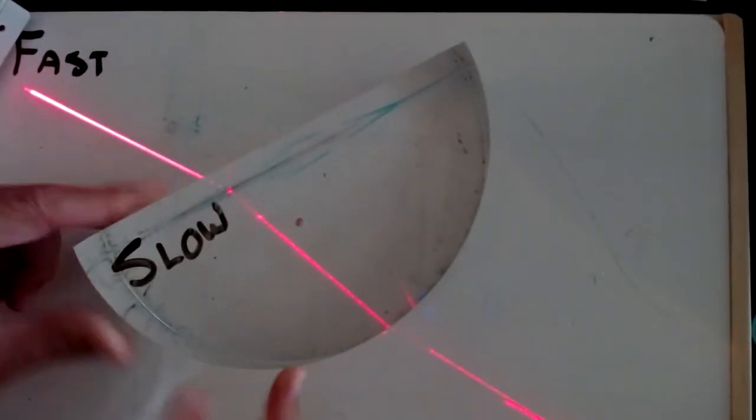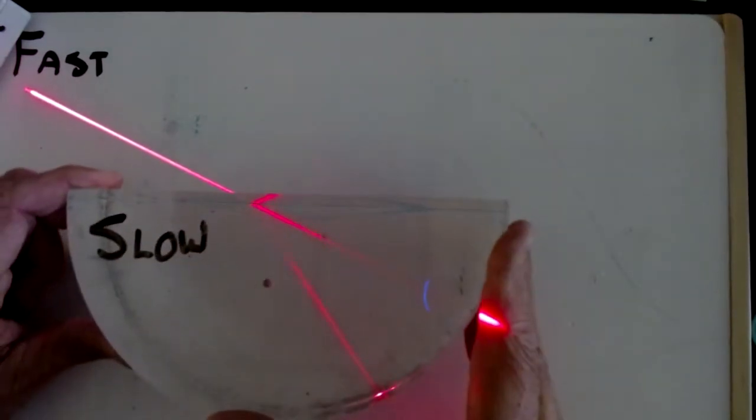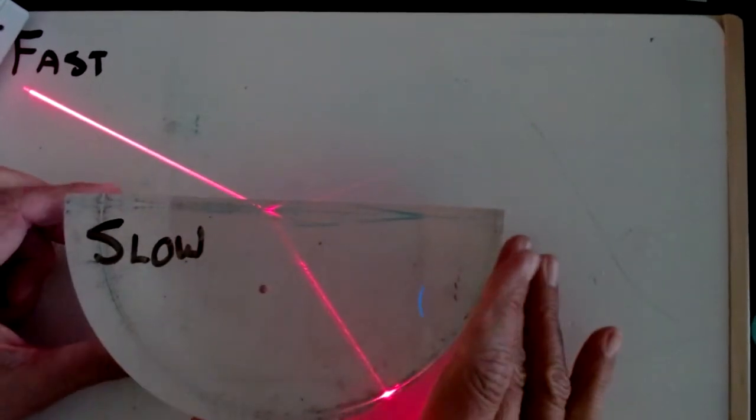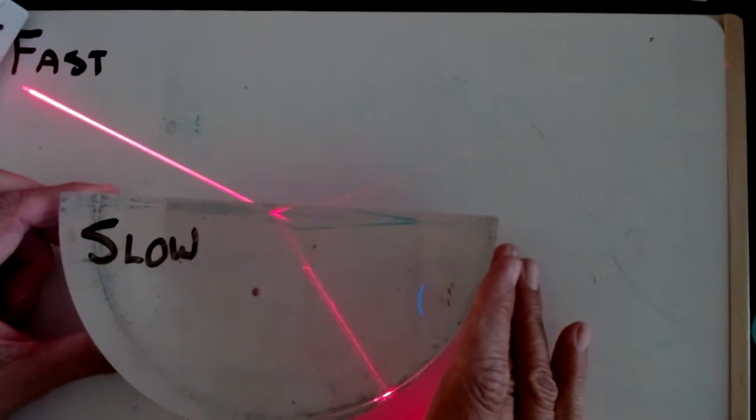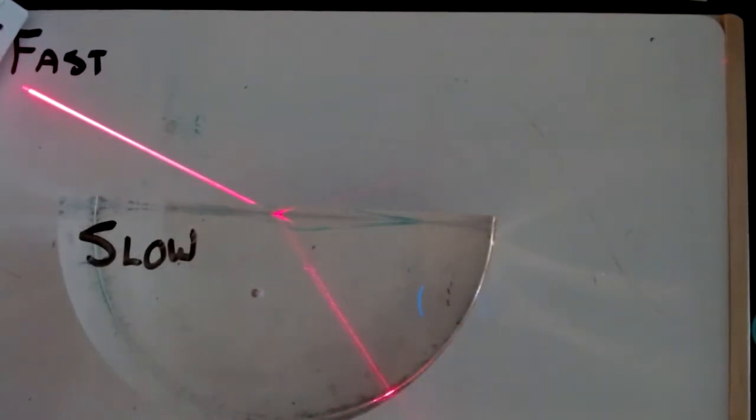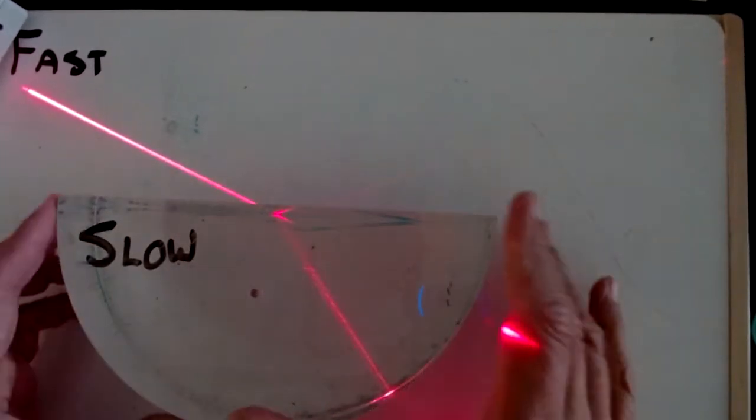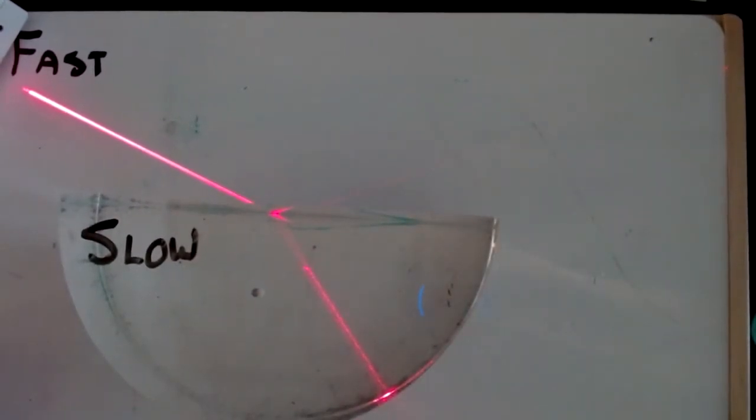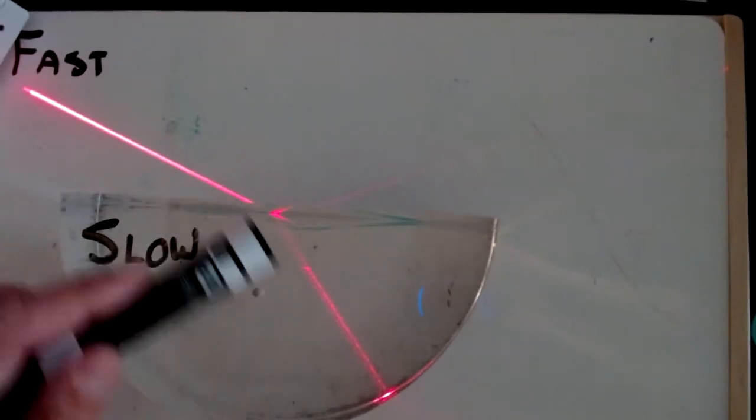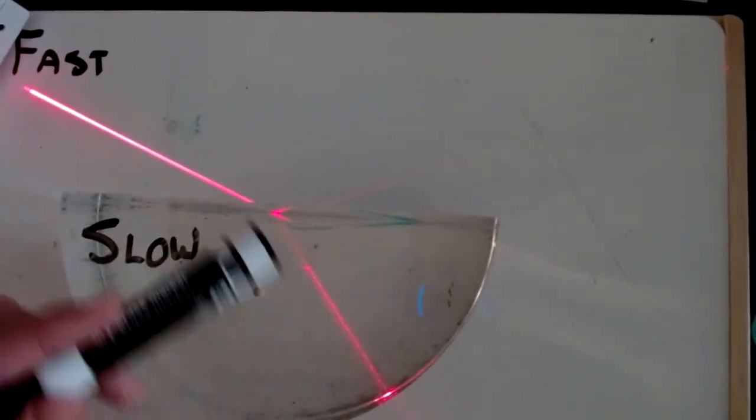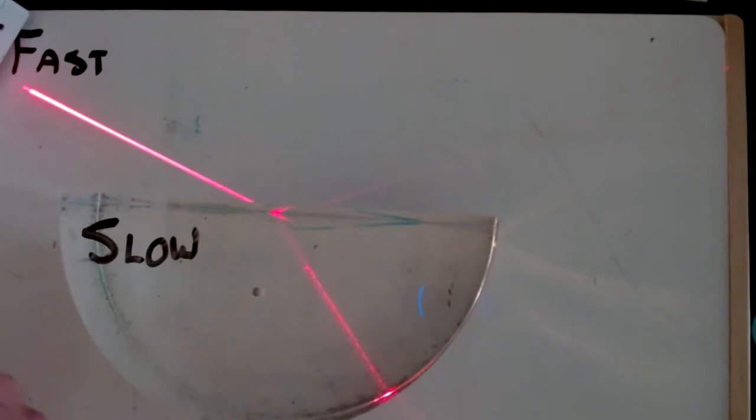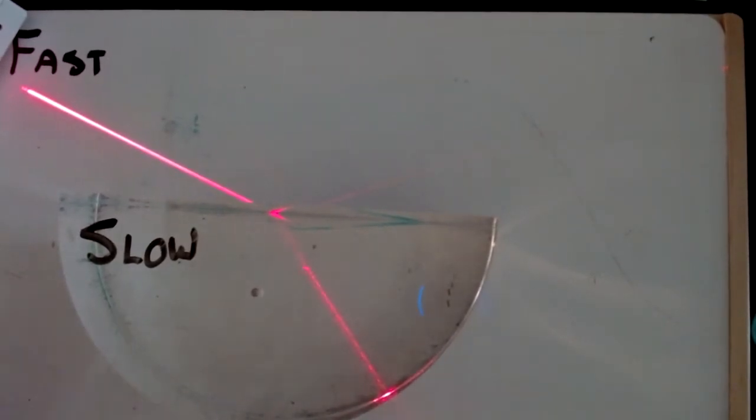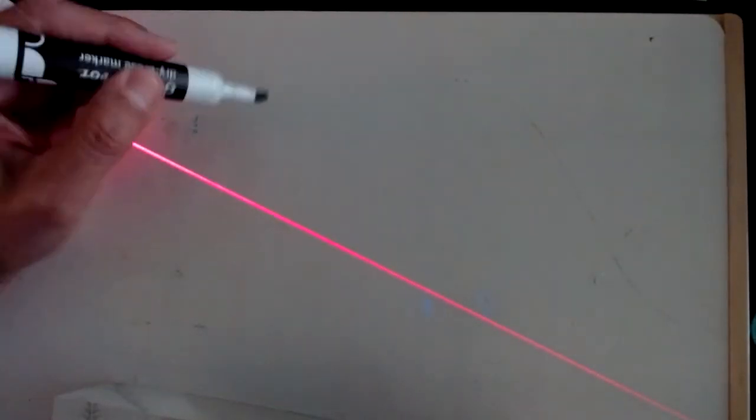It bends, it doesn't go in a straight line. And if we then look at what happens in that material and try to figure out why it bends or how much it's going to bend, then we can start to come up with a mathematical relationship. And it's based on how fast light travels here, three times ten to the eighth, and how much less fast it travels here, the velocity of light in the material.